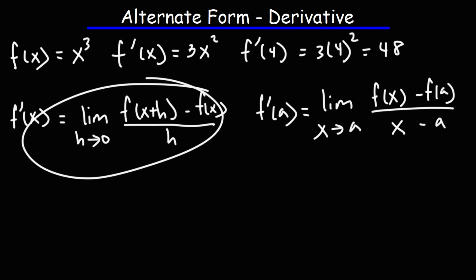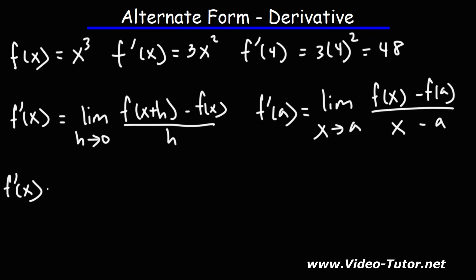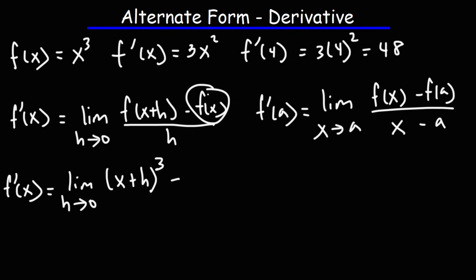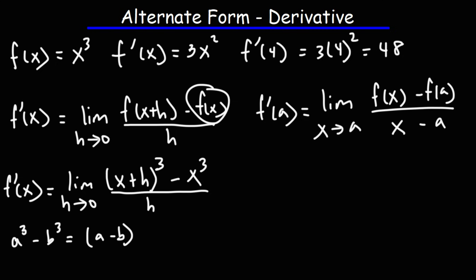Let's use both of these two formulas so you can see how it works. Starting with the standard limit definition: f prime of x is going to be the limit as h approaches 0. We have f of x plus h, so we replace x with x plus h — x cubed becomes x plus h cubed — minus f of x, which is simply x cubed, divided by h. Notice that we have a difference of two cubes. We can use the formula: a cubed minus b cubed equals a minus b times a squared plus ab plus b squared.